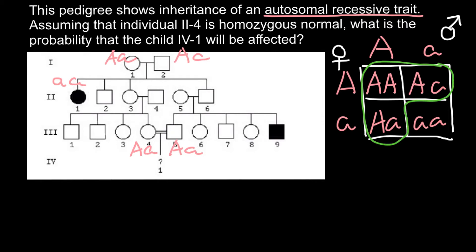We know for sure she doesn't have the homozygous recessive genotype, because otherwise her phenotype would be affected, just like her sister. So we know she belongs to one of the three remaining genotypes, and the probability of her being a carrier or heterozygous is 2 out of 3 — not 2 out of 4. So individual 2,3 has a 2/3 probability of being heterozygous.